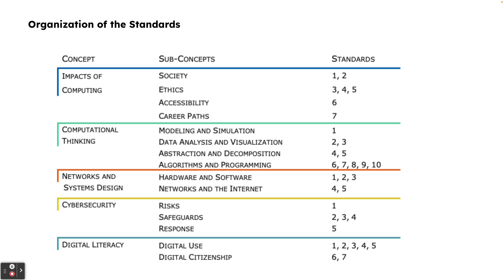Each concept area is broken down into sub-concept areas, each with a certain number of standards. Impacts of computing has four sub-concept areas and seven standards. Computational thinking has four sub-concept areas with 10 standards — the largest area. Networks and systems design has two sub-concept areas and five standards. Cybersecurity has three sub-concept areas with five standards. Digital literacy has two sub-concepts with seven standards. Remember, you can do these standards in any order and combine more than one into a lesson.